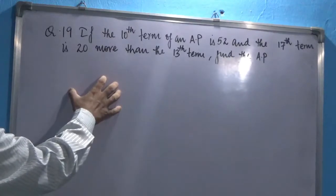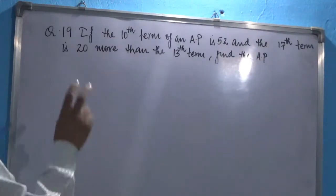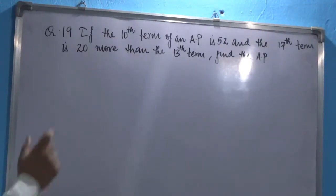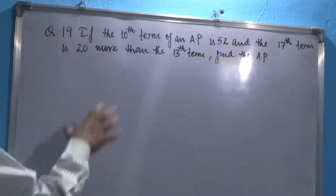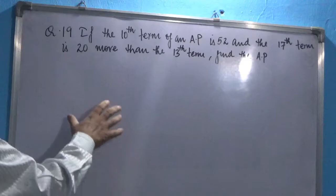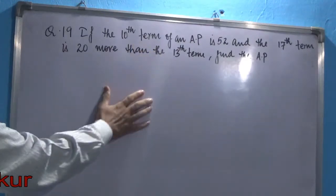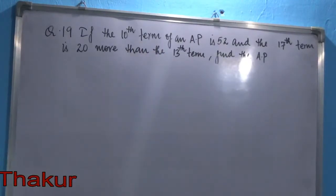In order to do this, we need to have two things. First is A, which is the first term, and second is the common difference D. These two things we will try to find out with the help of these two conditions given to us.